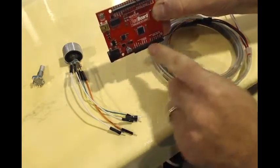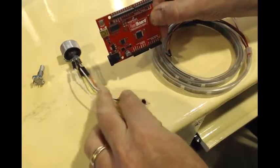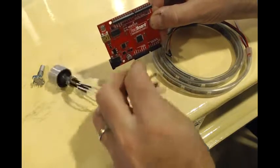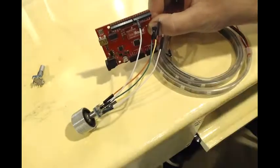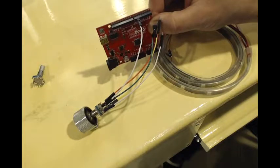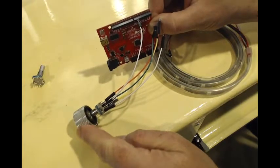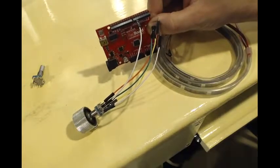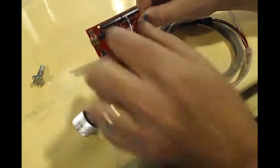And these black sections here are called headers and they allow jumper cables to plug in. And that's how information gets in, as in from the rotary encoder, into the controller and out to our LEDs.